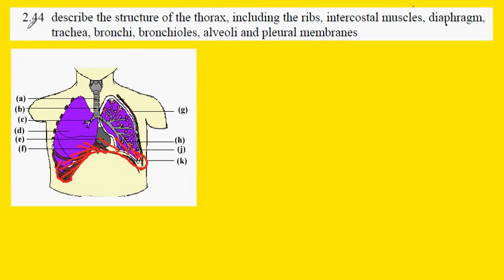GCSE Biology 244: Structure of the Thorax. The thorax is the biological term for the chest, and the chest is defined by a cage of bone called the ribs.